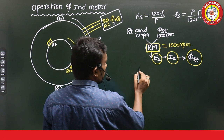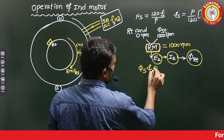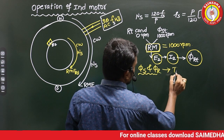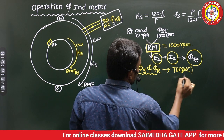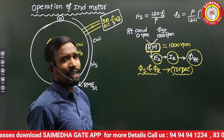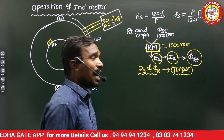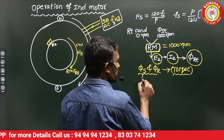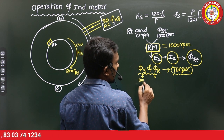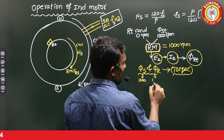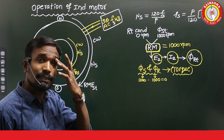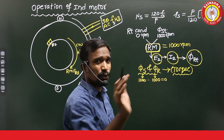Due to the interaction of stator flux and rotor flux, a torque will be induced. Torque will be produced in the rotor. To produce the torque, we must need two fluxes, and the relative motion between these two fluxes should be zero. The speed of the stator magnetic field is 1000 (Ns); the speed of the rotor magnetic field is also 1000. The relative motion between them is zero — and when the relative motion between them is zero, the torque will be produced.